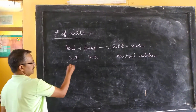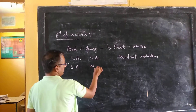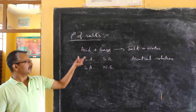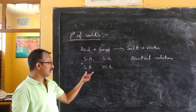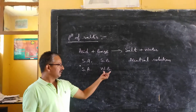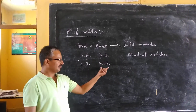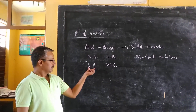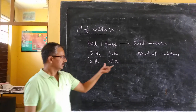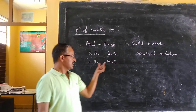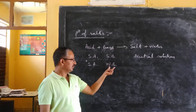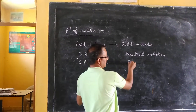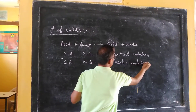Now, if the acid is strong and the base is weak — strong means that substance ionizes completely forming more ions, weak means it forms fewer ions — then the strong acid will produce more H⁺ ions and the weak base will produce fewer OH⁻ ions. H⁺ and OH⁻ will cancel each other, and the resulting solution will still contain excess H⁺ ions, making it an acidic solution.